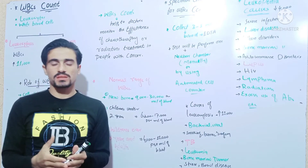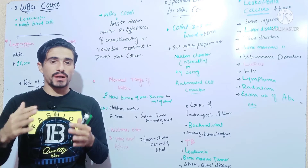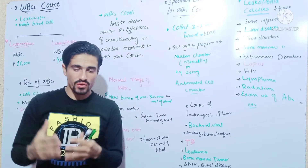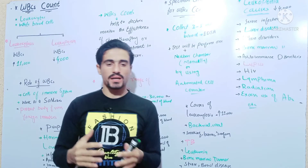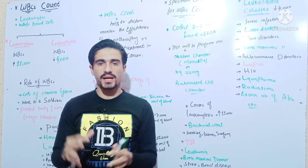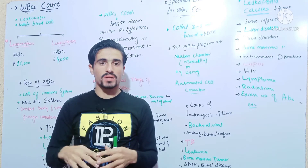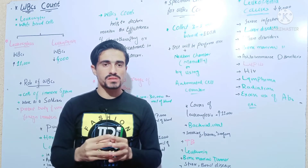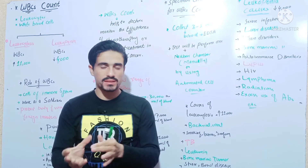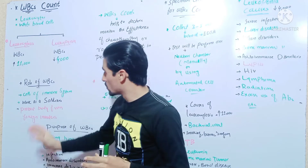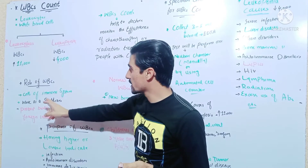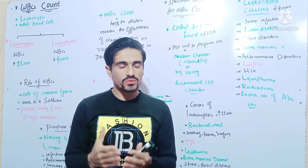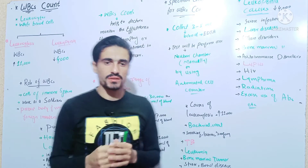When the WBC count is low, it means a low immune system. The WBCs function to protect the body against foreign invaders. For example, microorganisms, viruses, bacteria, and other pathogens — the immune system fights these to protect the body.